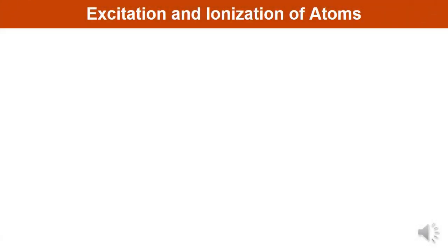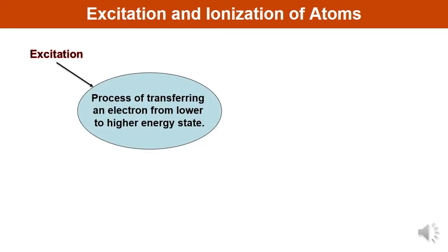There are two terms: excitation and ionization. First let us understand excitation, then I will explain ionization of atoms. Consider the simplest atom, that is the hydrogen atom. Hydrogen atom has one electron in the innermost orbit, n equals 1, and it is said to be in an unexcited or normal state. If we provide some additional energy to the electron, it moves to a higher state, and the atom is said to be excited. So excitation is the process of transferring an electron from a lower to a higher energy state.